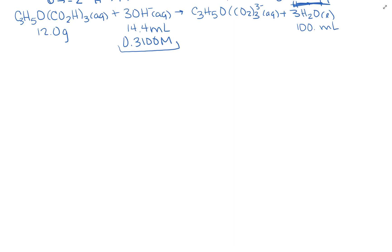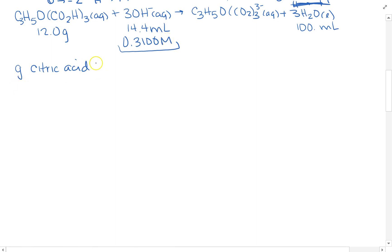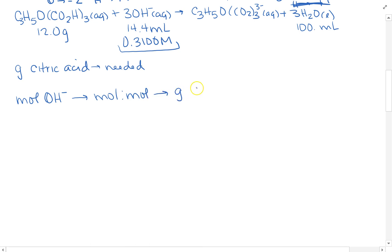I'm finding mass percent, and I already have the 12 grams (the mass of the candy). I still need to find the grams of citric acid in that candy. My plan: first find moles of OH⁻ from the molarity and volume, then use a mole-to-mole ratio to get moles of citric acid, and then convert to grams using the molecular weight. That follows the mole chart from this week — starting at moles, doing a mole ratio, then finding grams.